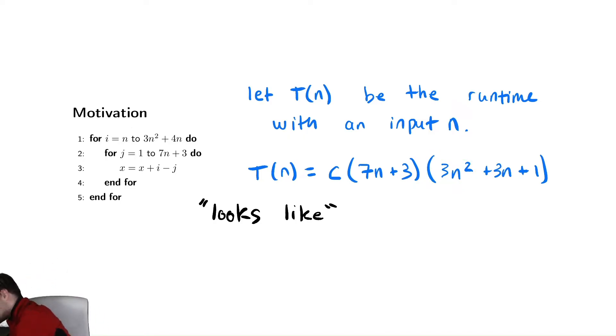So it looks like, in some sense, c times 7n times 3n squared, which is 21cn cubed. So in some sense, it looks like 21cn cubed.